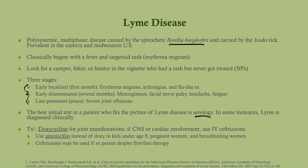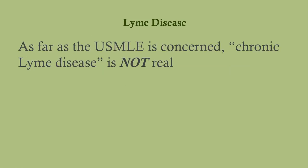The best initial test for Lyme disease is serology, which is also the most accurate. Treatment depends on age and pregnancy status. Doxycycline is given to all patients with early Lyme disease unless they are under age eight or pregnant and breastfeeding — in those cases use amoxicillin. If there is CNS or cardiac involvement, or if doxycycline or amoxicillin fail, use IV ceftriaxone. On the USMLE, chronic Lyme disease is not considered real.